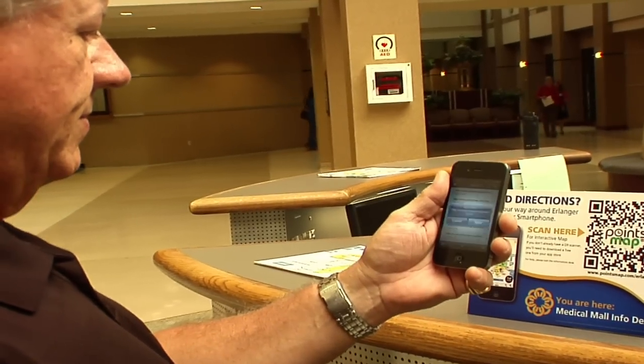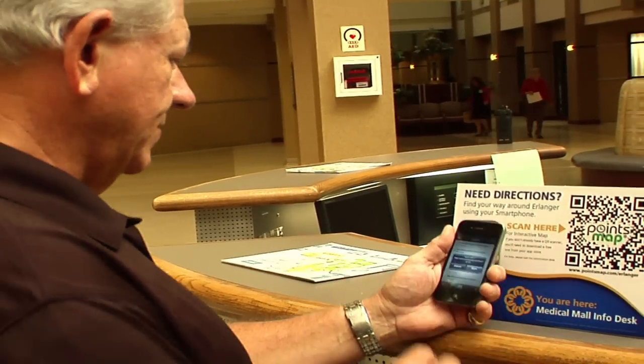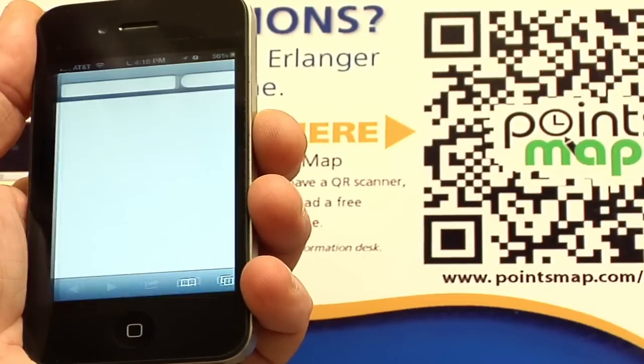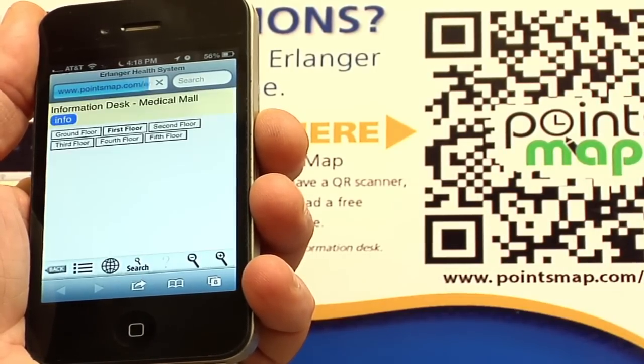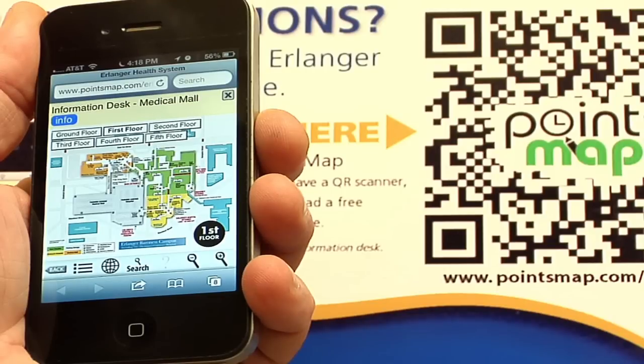Using a QR code reader such as Red Laser or QuickMark, scan any of the QR codes displayed throughout the hospital to open the Erlanger Points Map in your smartphone's browser and see your present location within the facility.